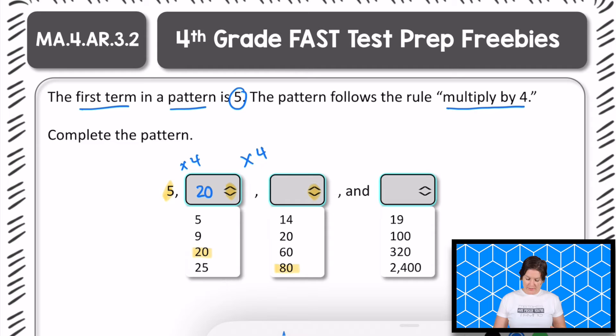Okay, so 80 is our third term. Multiply that third term of 80 by 4 to continue following that rule. 80 times 4 equals what? 320.